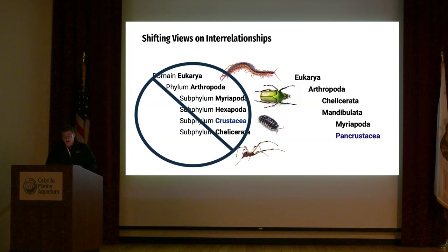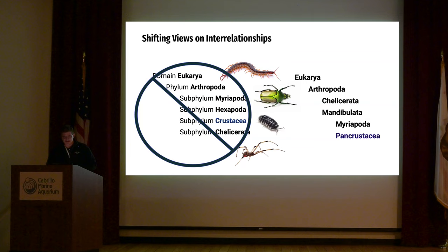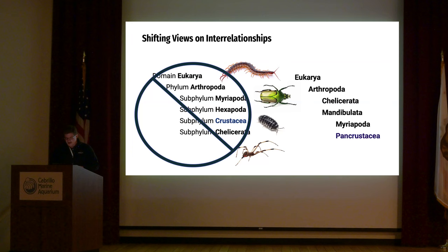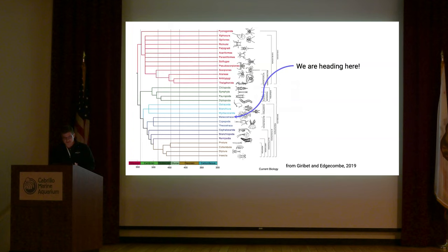Then we have Crustacea — crabs, shrimp, lobsters, and a wide array of other organisms you might never have heard of. Part of my purpose is to share one of those tiny groups within Crustacea. We also have Chelicerata — scorpions, spiders, ticks, mites. It turns out, not too surprisingly, that insects, the most diverse animal group on the planet, are actually just crustaceans. So both are now lumped in the same group: Pancrustacea. From there on the arthropod tree, we head toward a group called the Amphipoda.